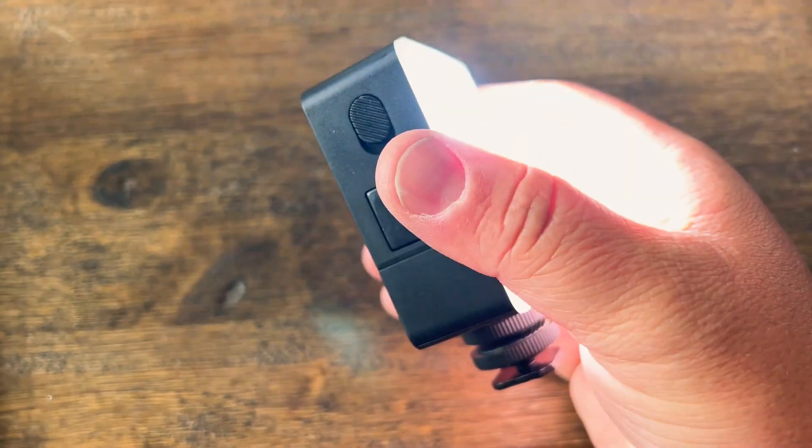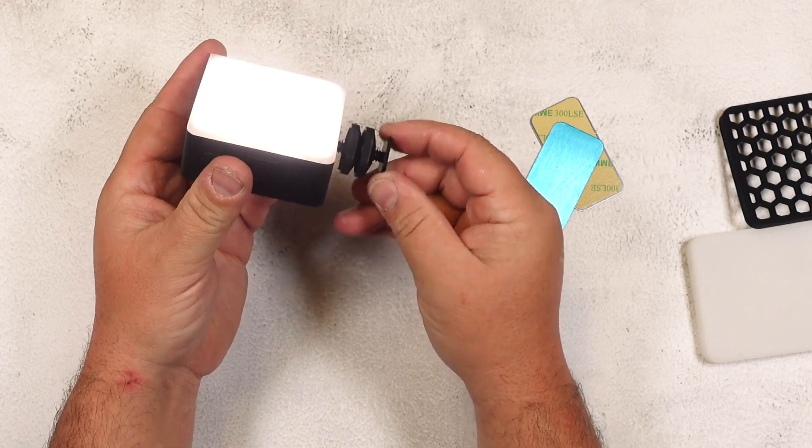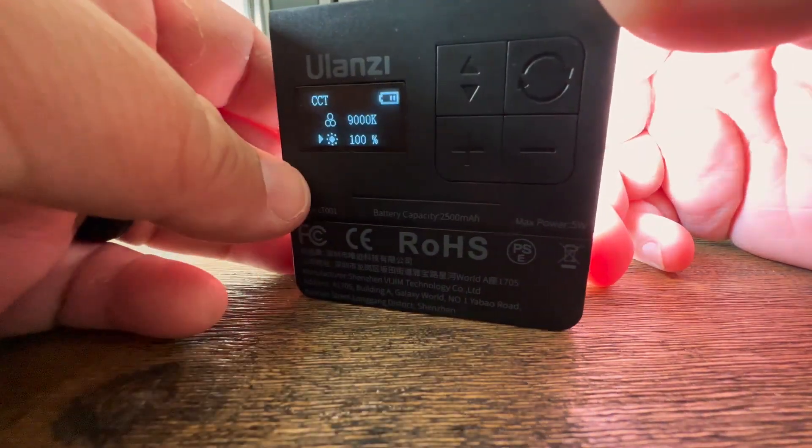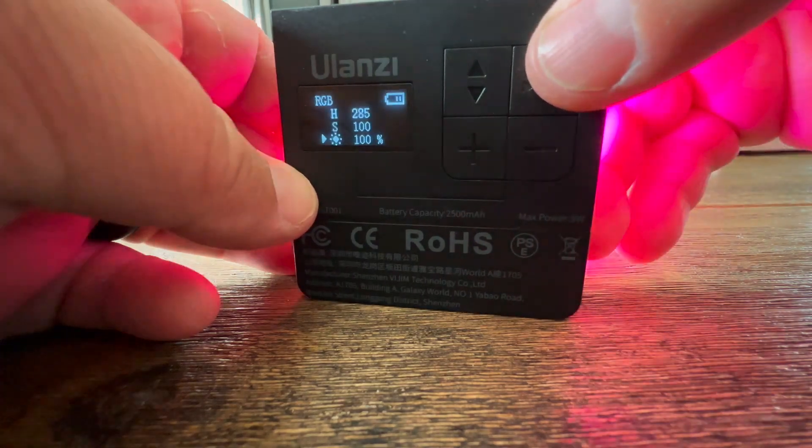There's a switch on the side to power it on, a quarter thread for mounting which comes with a cold shoe converter. There's a screen on here so you can see your settings and four different buttons to navigate those settings and adjust the brightness.